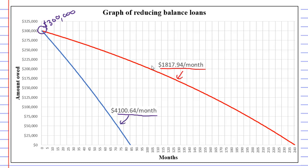Now, what you'll notice is that the blue graph gets paid off a lot quicker than the red one. The red one gets paid off at the end of 240 months, which is the equivalent of 20 years. While the blue one gets paid off at the end of 84 months, which is equivalent to 7 years.